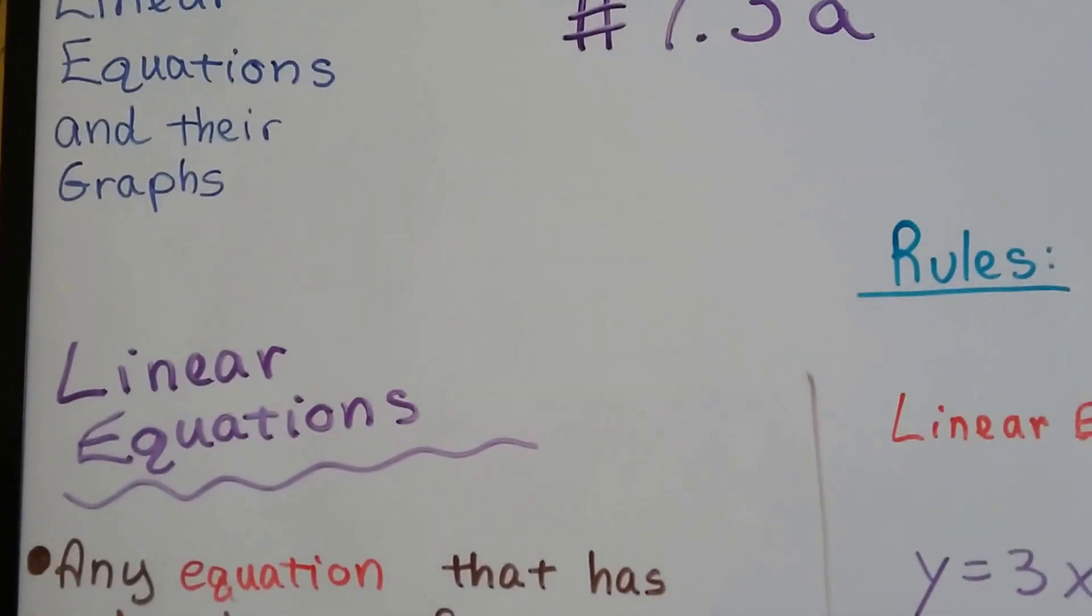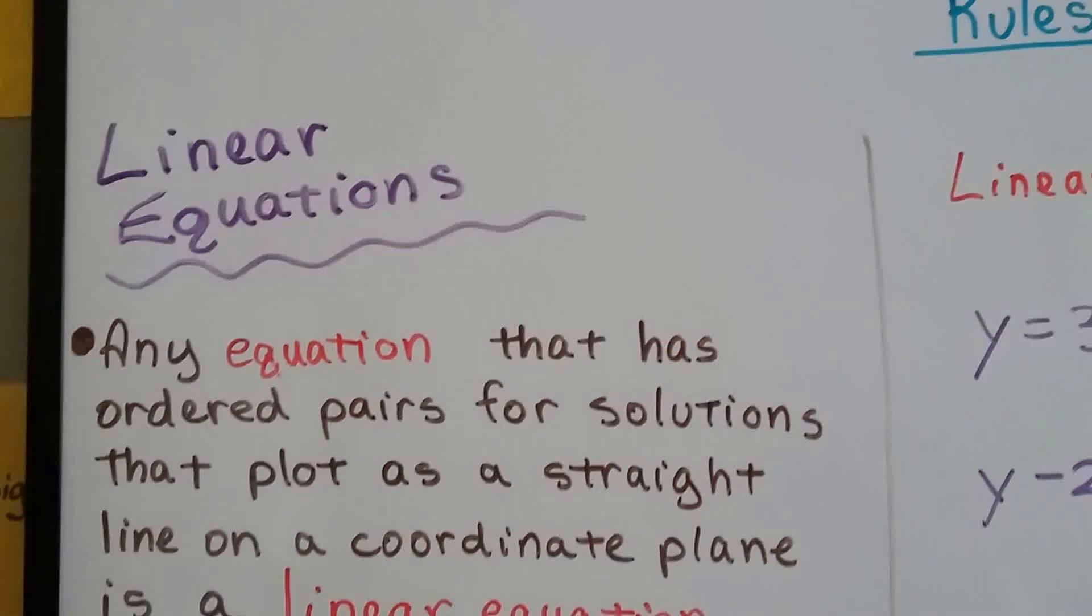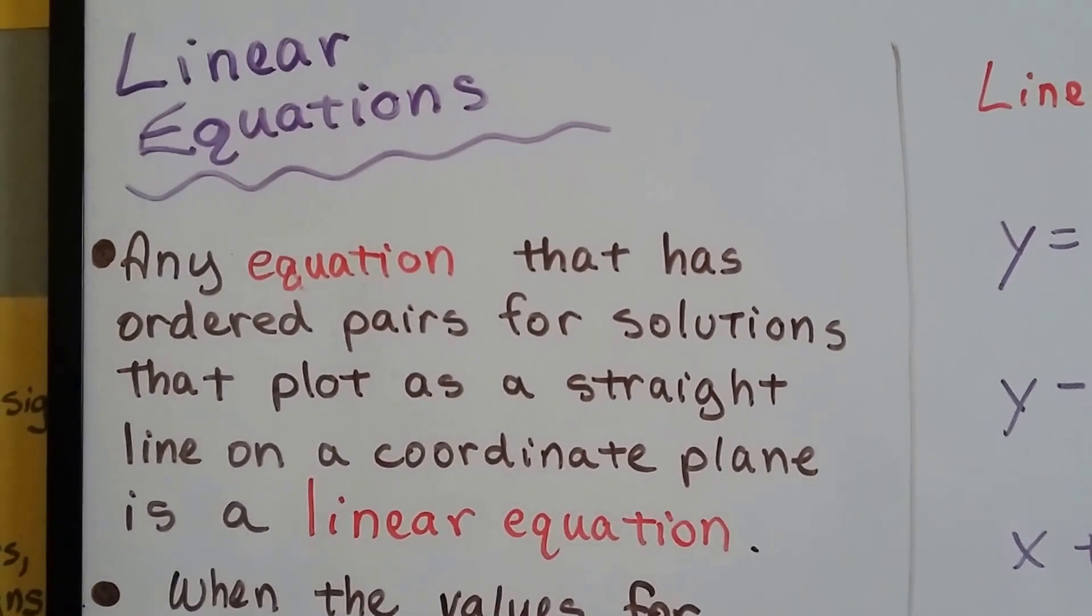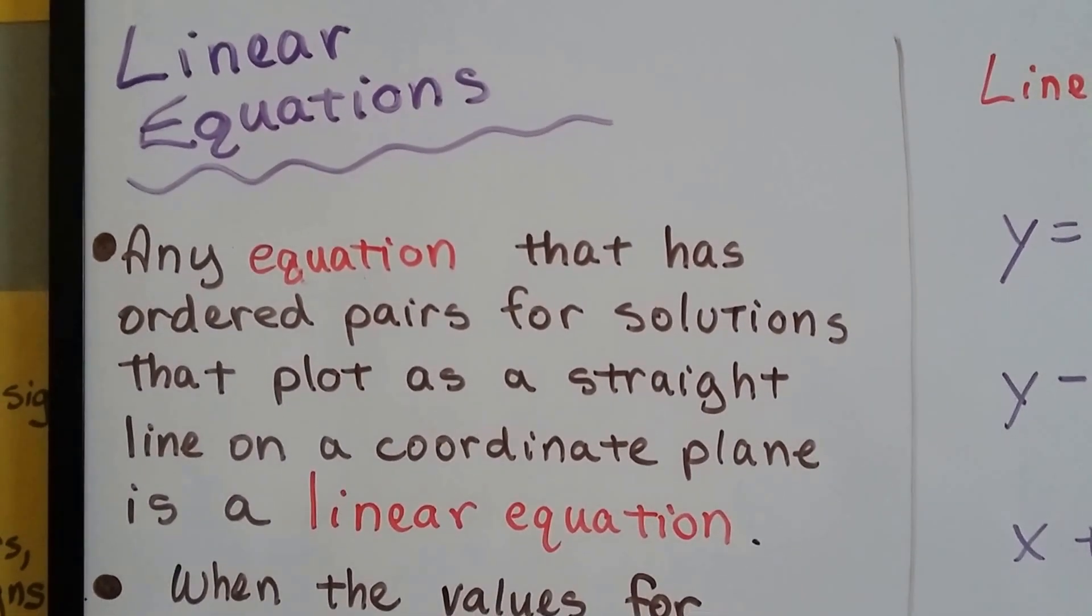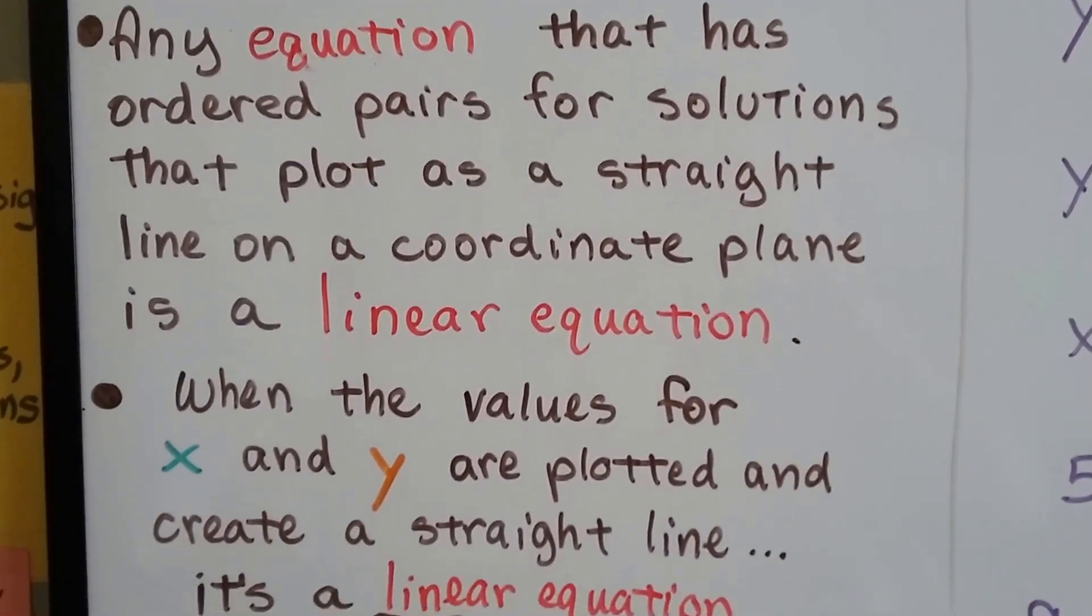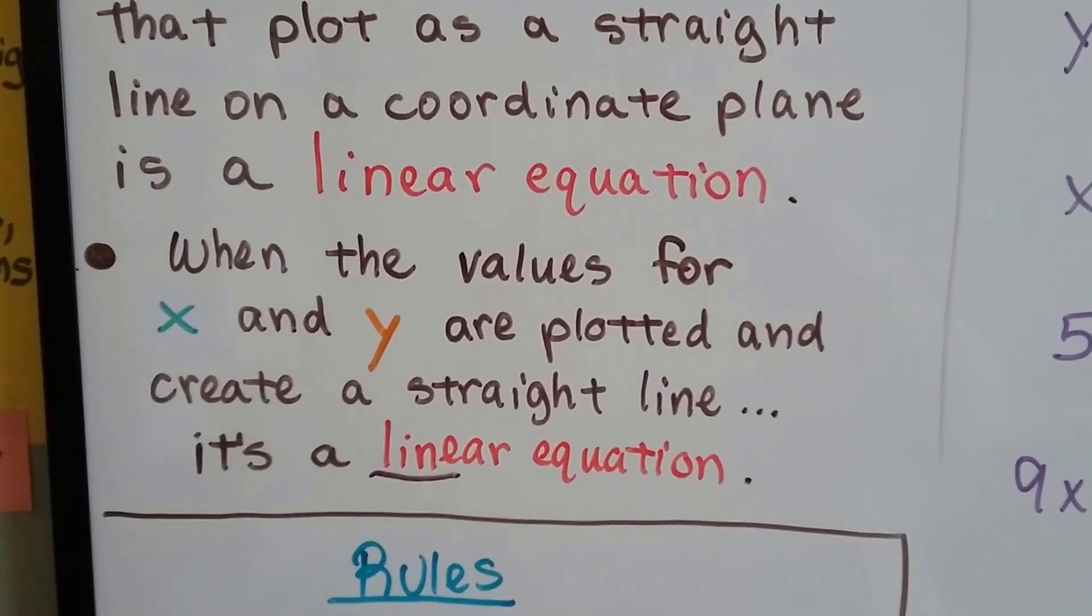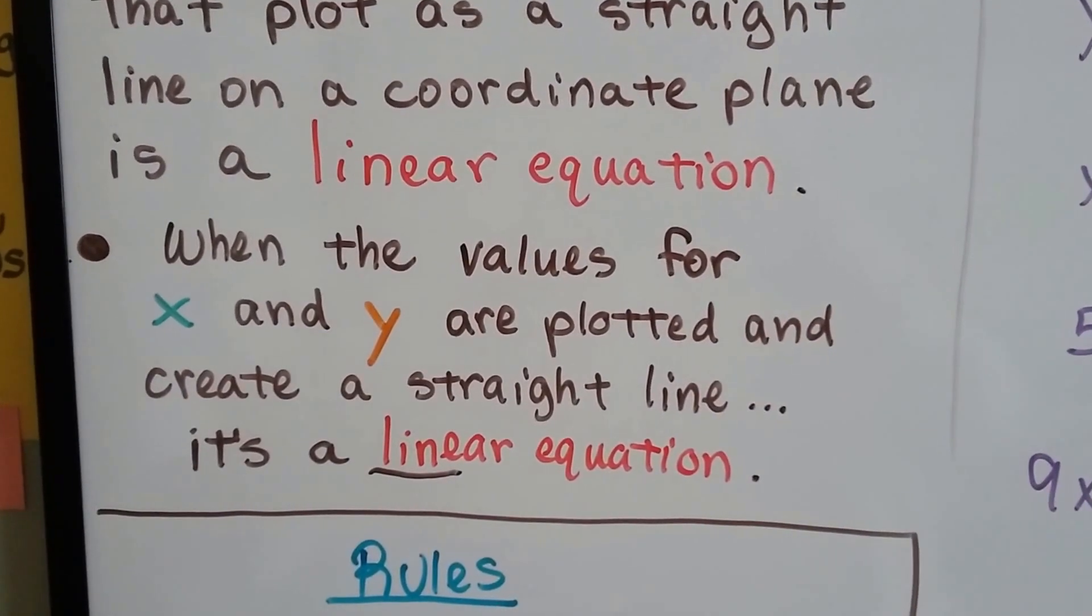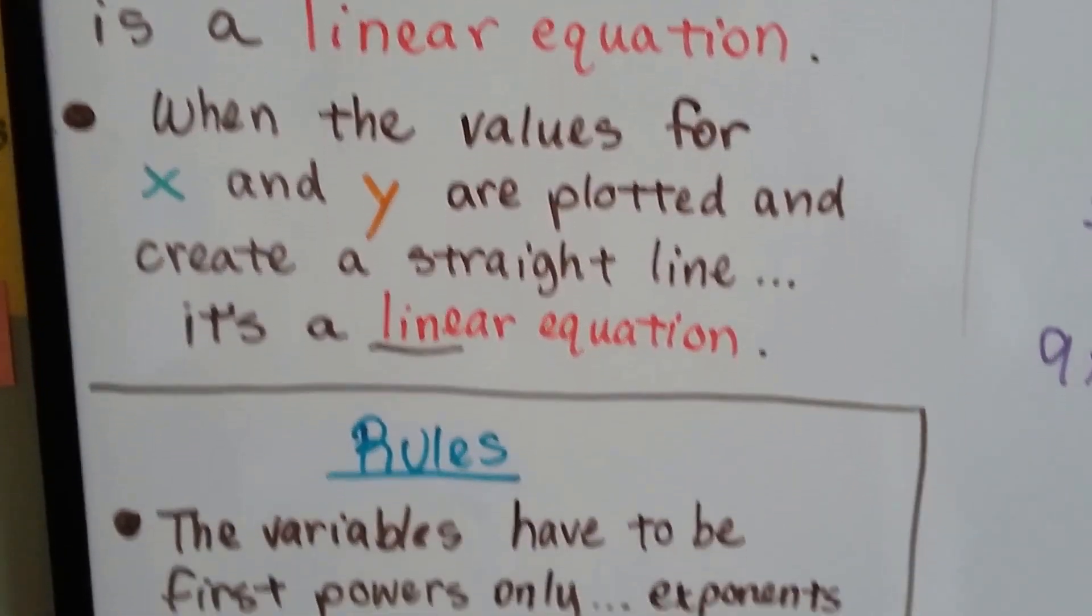7.3a Linear Equations. Any equation that has an ordered pair for solutions that we can plot as a straight line on a coordinate plane is a linear equation. When the values for x and y are plotted and they create a straight line, it's a linear equation.